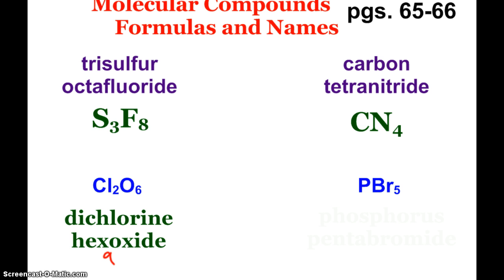PBr5, okay, again, there's only one phosphorus, I don't have to say monophosphorus, I just say phosphorus pentabromide. Of course, a whole branch of molecular compounds involving carbon, organic chemistry, has a much more complex nomenclature system, but that's for another day and time.